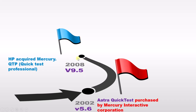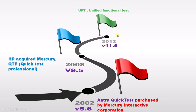After 2008, the next milestone year is 2012, wherein they renamed QTP as UFT — that is Unified Functional Testing — with version 11.5. So from 9.5 till 11.5 it was QTP, but after 11.5 it became UFT, Unified Functional Testing.